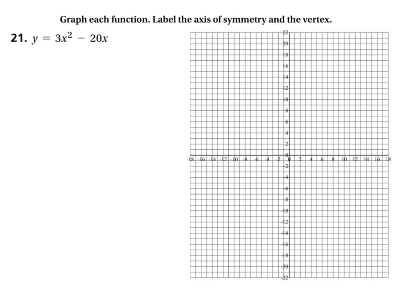First thing I'm going to do is identify the A, B, and C values. I'm going to put them down here on the bottom just so we know what we're dealing with. A equals 3, B equals negative 20, and C equals 0 because it's like an invisible plus 0 at the end there. I just wrote it at the top, so you can just imagine it if you needed to know the C value.